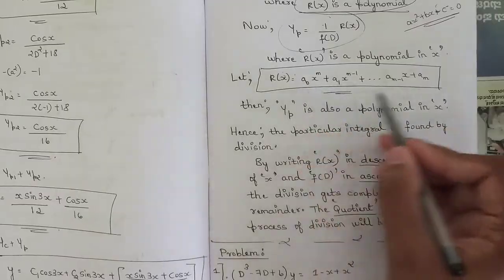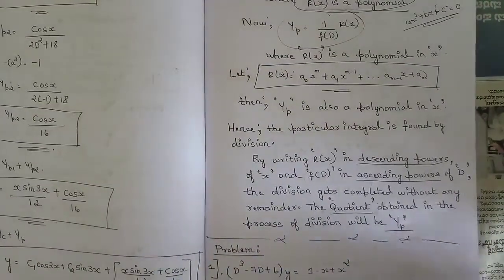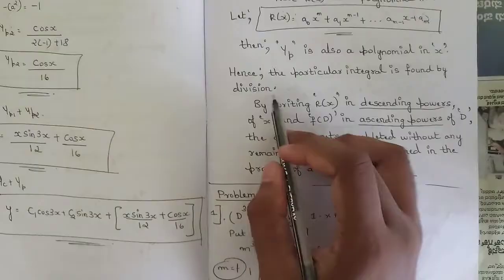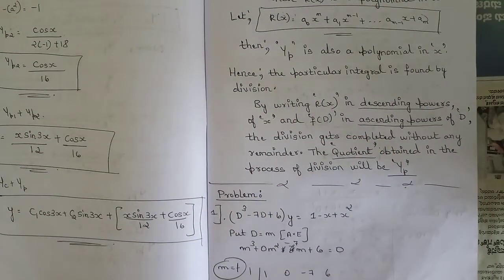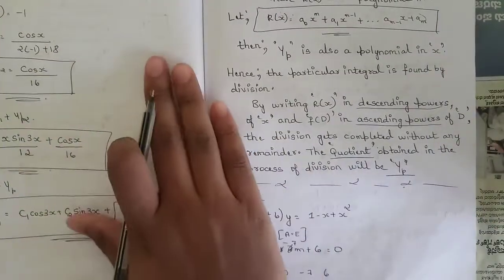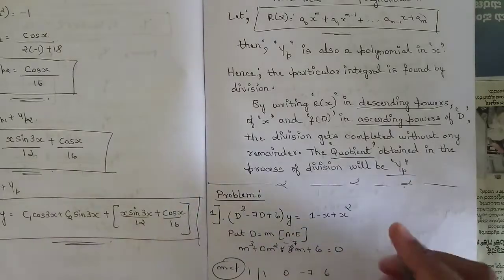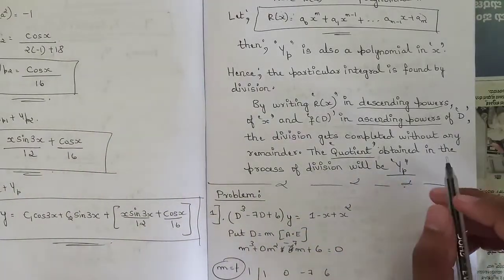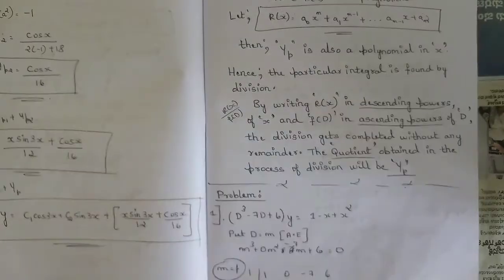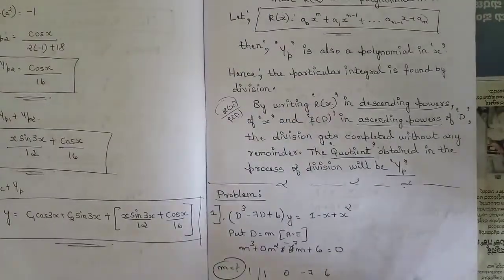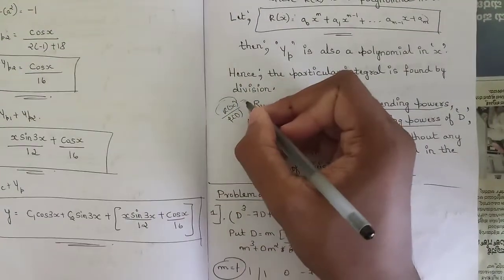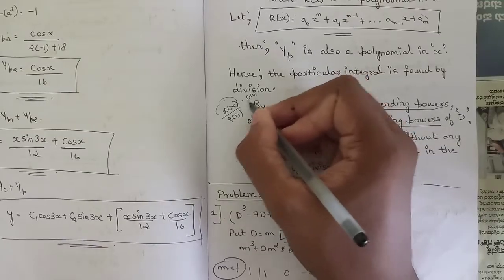When r(x) is given as a polynomial, we need to find the particular integral using polynomial division, similar to what we have done in lower classes. The formula for yp is r(x) divided by f(D), where r(x) is the dividend and f(D) is called the divisor.